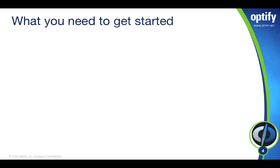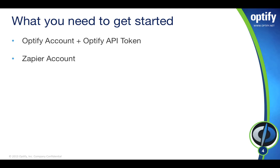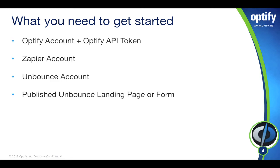So what are the things that you need to get started? First, an Optify account and also the Optify API token, a Zapier account, an Unbounce account, and make sure you have a published Unbounce landing page or form.